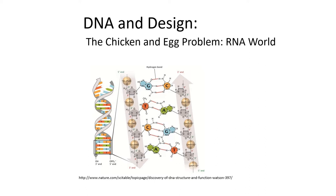Welcome back to our DNA and Design series. This is the second lecture in the sub-series, The Chicken and Egg Problem. The chicken and egg problem has to do with DNA and proteins. The basic idea is that you need DNA to make proteins, but you also need a suite of proteins already functioning inside the cell to be able to use the DNA to make those proteins. So those proteins basically have to exist so that you can make them from DNA.